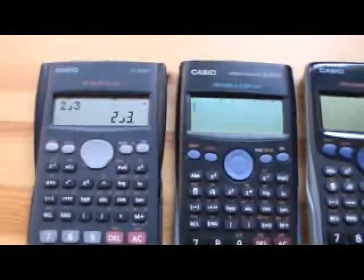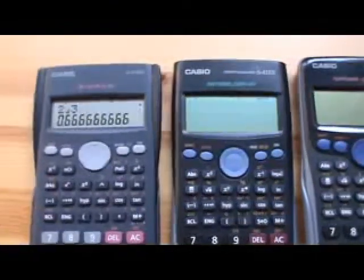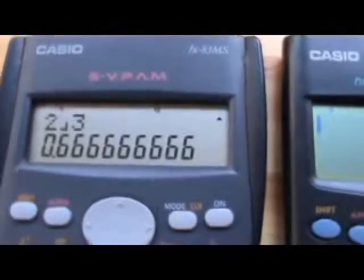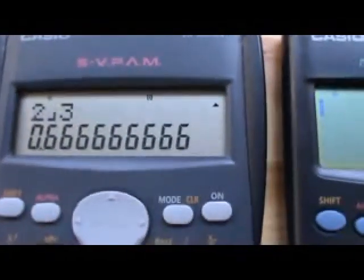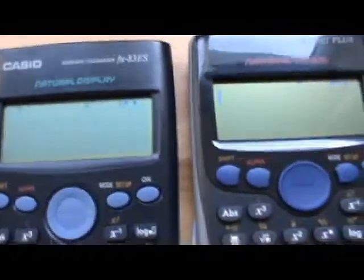And that's how it represents the two thirds. If we press the ABC button again, it changed it to a decimal for us. So that tells us the answer: 0.66666666. Let's try the next calculator.